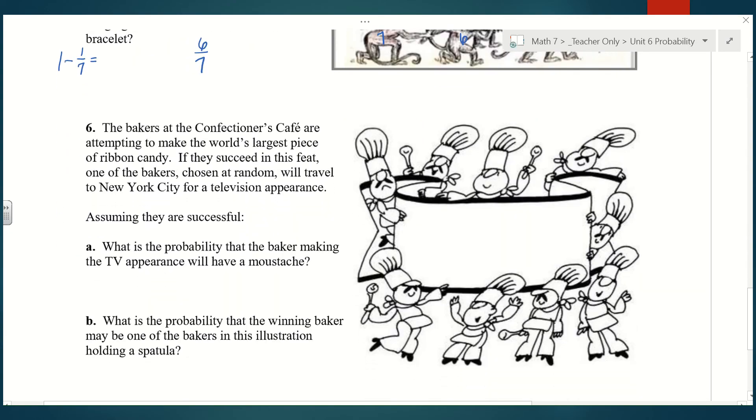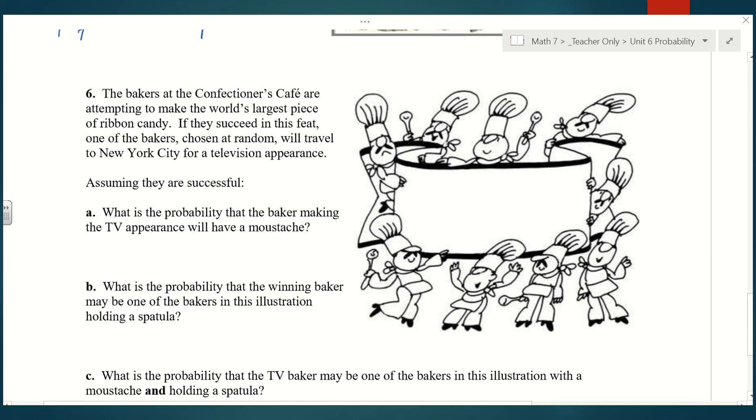Number six, the bakers at the confectioner's café are attempting to make the world's largest piece of ribbon candy. If they succeed in this feat, one of the bakers chosen at random will travel to New York City for a television appearance. Assuming they are successful, part A, what is the probability that the baker making the TV appearance will have a mustache? First things first, we have to figure out how many bakers we're talking about. Let's count them up. Nine total bakers. Out of the nine, I need to figure out how many have a mustache. One, two, three, four, five, six is what I'm counting, which would reduce to 2/3.